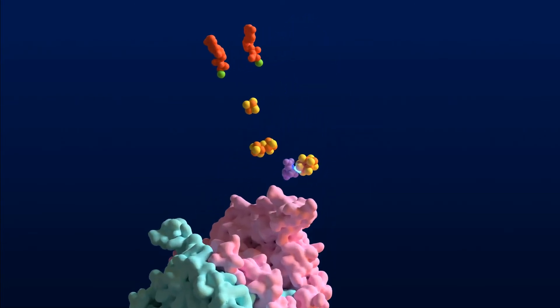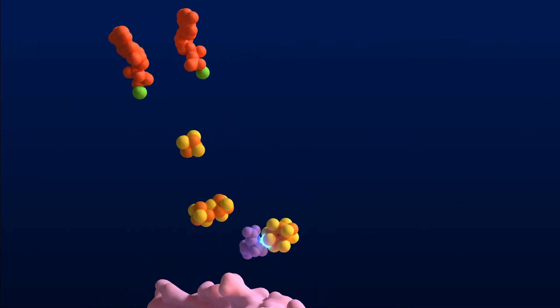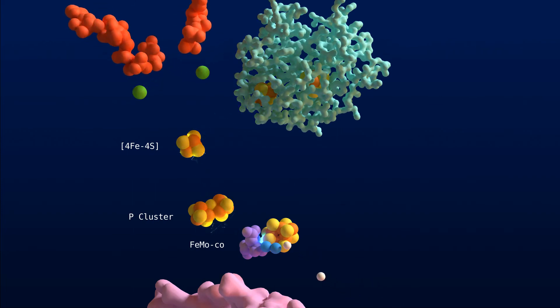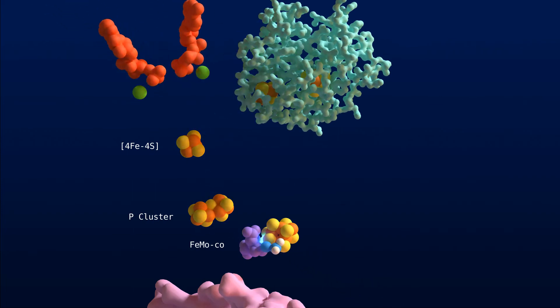The six electrons required for this reaction are supplied by a carrier protein such as ferredoxin, and they are fed in through the uppermost cluster. The P-cluster in the middle is especially interesting because its structure changes in between electron transfers. It acts like a valve to prevent electrons from flowing backwards.